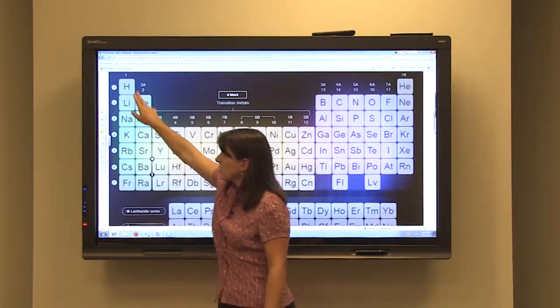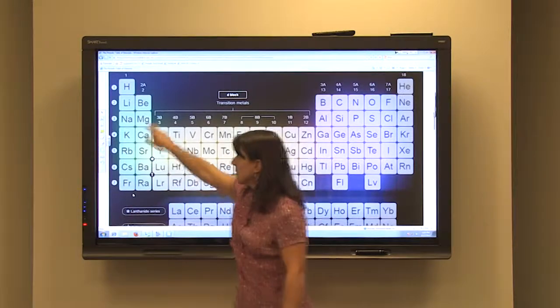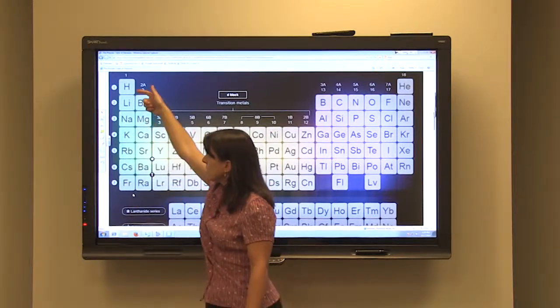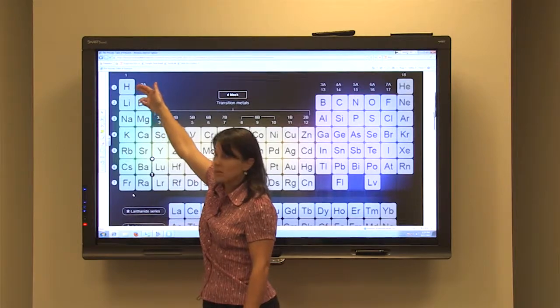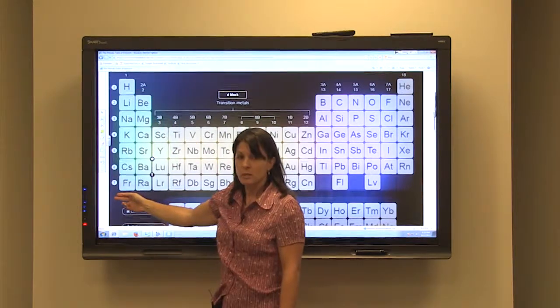Metallic character increases going down a group. So as you go down the group, we have the least metallic character at the top and it increases going down.